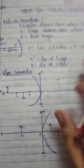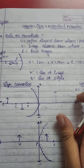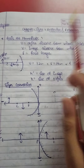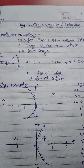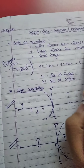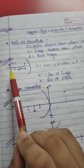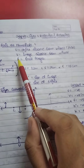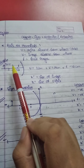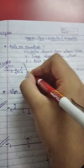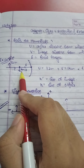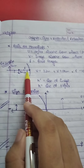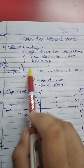Now the next topic is sign convention, which is very very important. Without it you will not be able to solve any numerical. The symbols are: U is the object distance from the mirror, V is the image distance from the mirror — for example if the image is at 14 cm then V equals 14 cm — and U is the object distance, for example 32 cm.